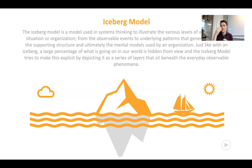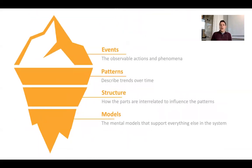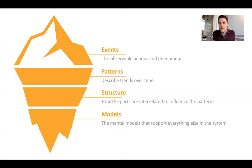We see the tip of the iceberg when we look at systems — that's the immediate outcome. Whereas if we want to really influence them, the upstream thing, we need to go down and figure out what's going on underneath the waterline. There are four levels: above the water is what we see — the event, the observable actions and phenomena. Just below the waterline are the patterns that describe trends over time. Below that we have systemic structures. Each level above emerges from the one below.